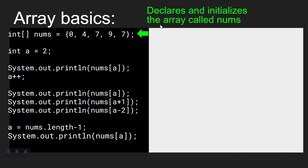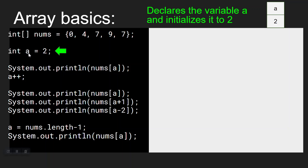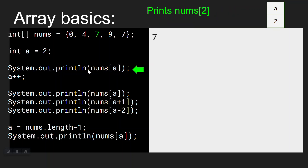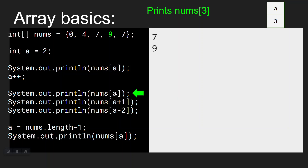This first line of code is declaring and initializing an array called nums with these values. Next, we're creating a new variable called A and setting it equal to 2. Now we get to a print statement that says print nums at index A. A right now is 2, so this is nums at index 2. We start counting at 0 — 0, 1, 2 — that's our first 7 that's printing. Then we hit A++, which increments A up to 3. Now the next print statement says print nums at A. This time A is 3, so we're printing nums at index 3 — that's number 9.